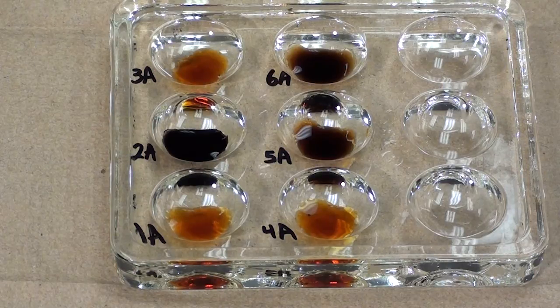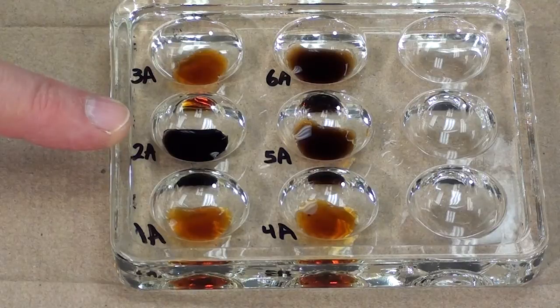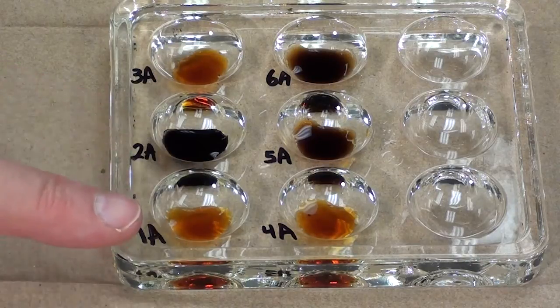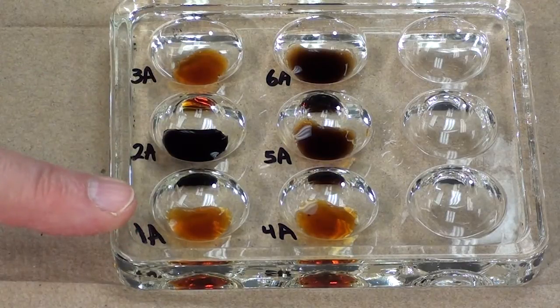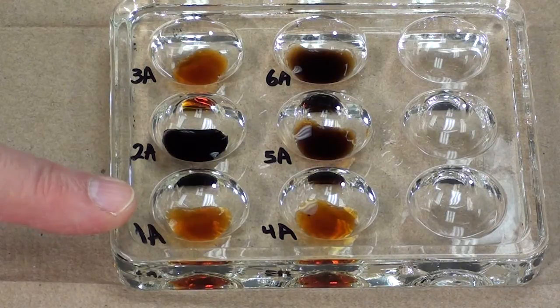This is the iodine test for starch. If the spot plate contains a black colored solution, that's an indication that the iodine is reacting with some starch. Iodine that did not discover or react with starch is an orange-brown color.